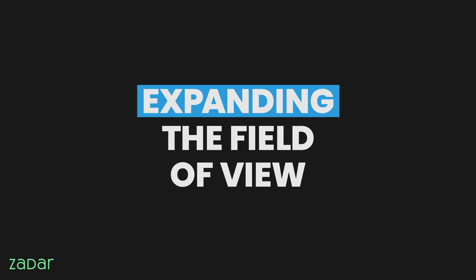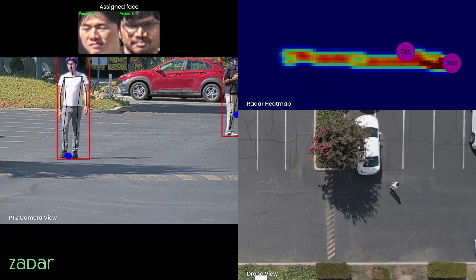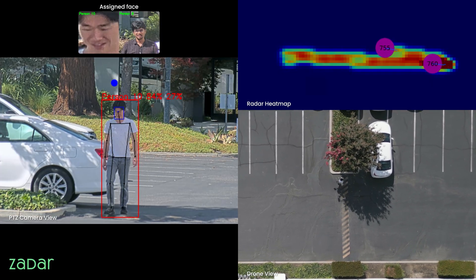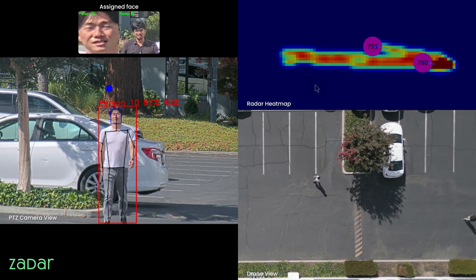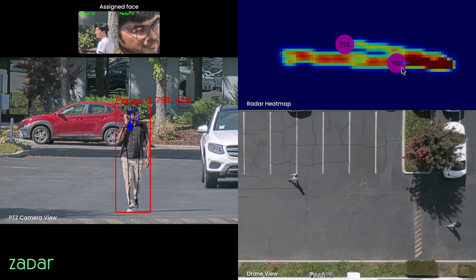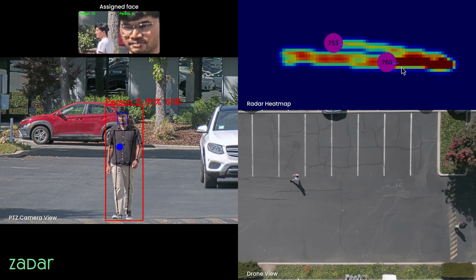Expanding the field of view. Cameras see in one direction. Radar sees everything, all the time. While a lens follows one subject, Z-Prime monitors the entire environment, detecting and tracking activity beyond the camera's field of view.